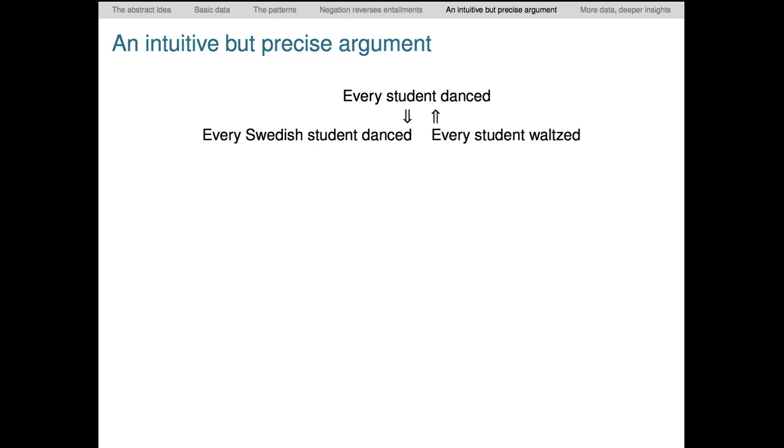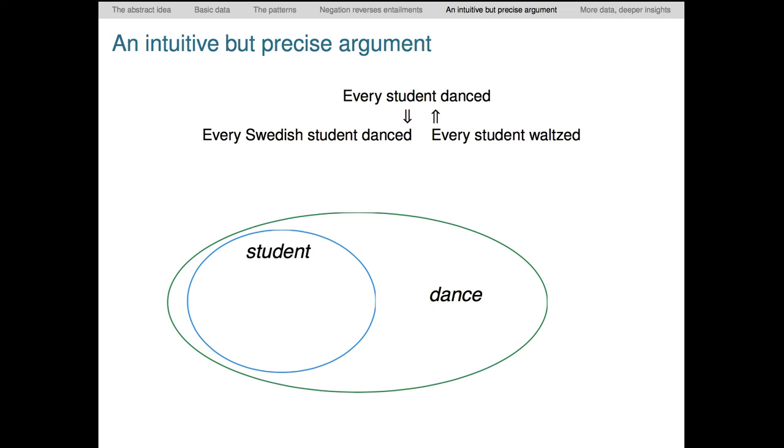The canonical picture of a true every statement is like this. When we add material to the restriction, we're going into subsets. For instance, the Swedish students, the Canadian students, and so forth. As we look inside the first argument, we obviously can't leave the original space of students. So if student was inside dance, then of course all its subsets will be. Hence the downward arrow.